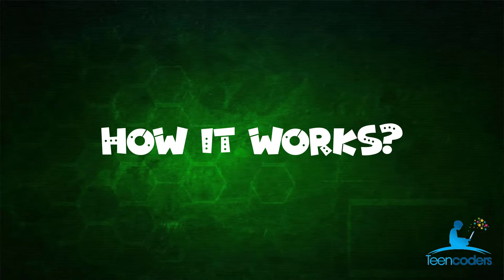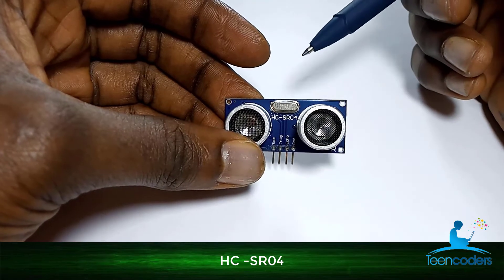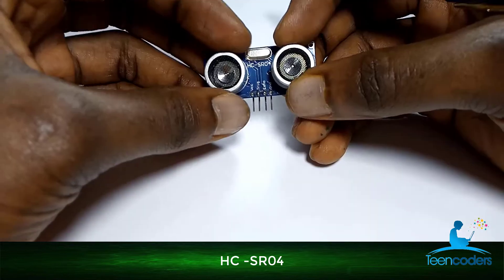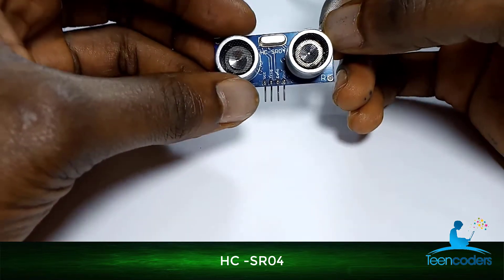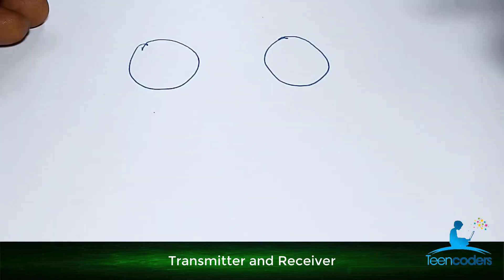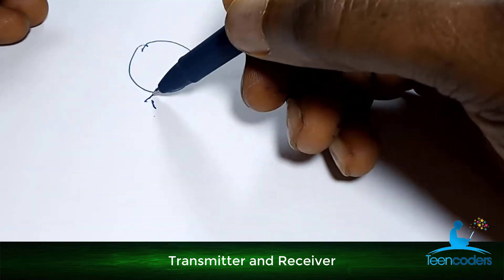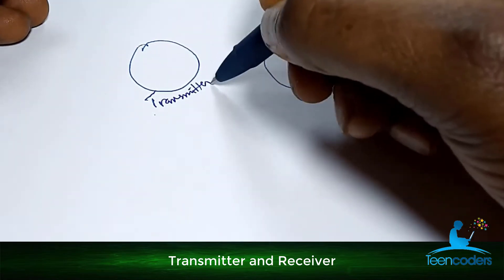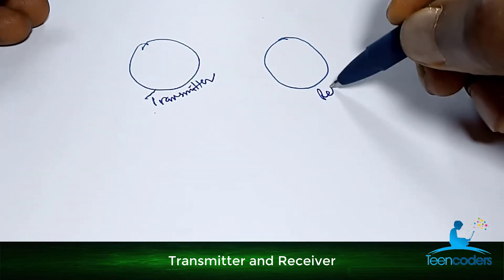How does the ultrasonic sensor work? Basically, what we have here, an example is HCSRO4 ultrasonic sensor, which is common for many Arduino projects. The ultrasonic sensor has two parts. One is the transmitter and the other one is the receiver.